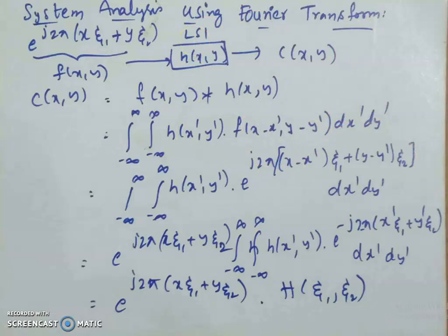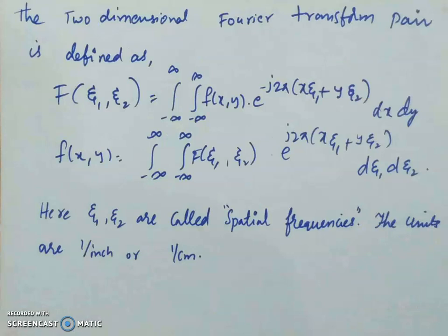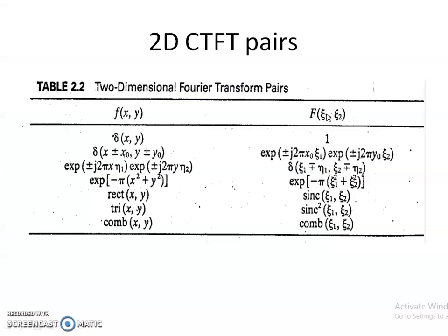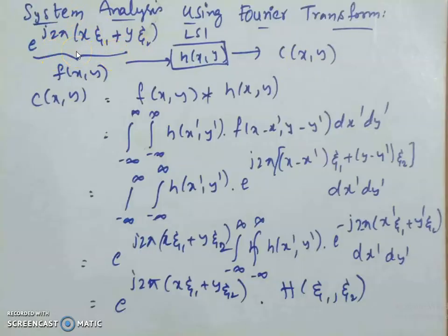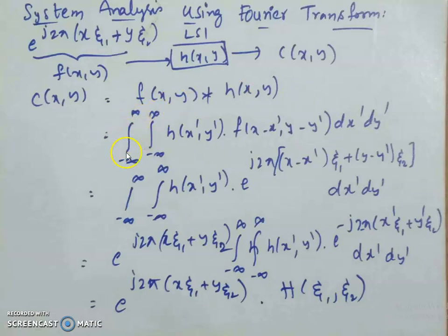Why are we interested in the complex sinusoidal as the basis function? The kernel used in the definition is a complex exponential signal. The reason is that the complex exponential is an eigenfunction of an LSI system. Let us look at the proof. Apply e^(j2π(xζ₁ + yζ₂)) as input to an LSI system with impulse response h(x,y). Let the output be c(x,y). Then c(x,y) = f(x,y)*h(x,y), which written as a convolution integral is ∫∫ h(x′,y′)·f(x−x′, y−y′) dx′ dy′.